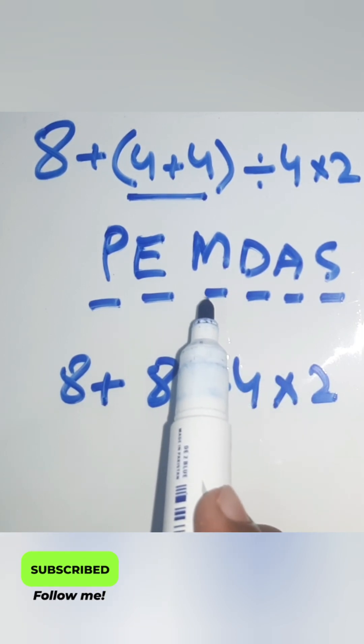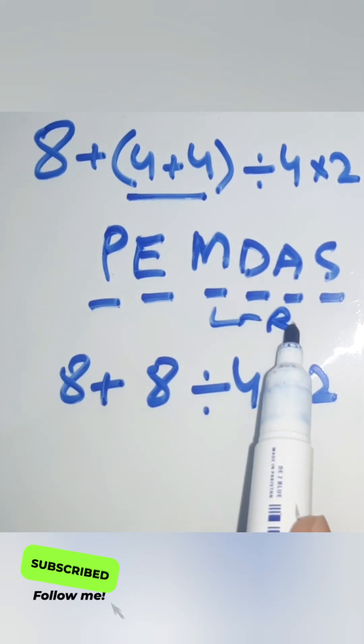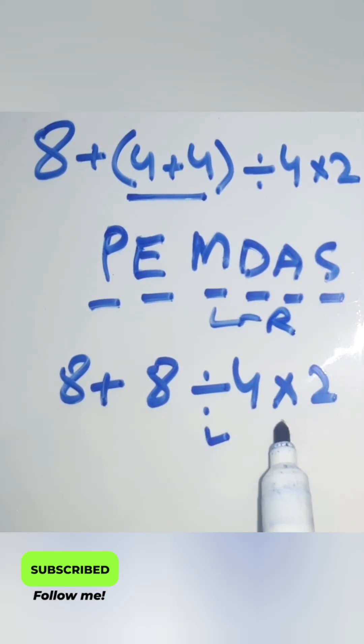So we remember that multiplication and division have equal priority, and we have to work from left to right. So first division, then multiplication.